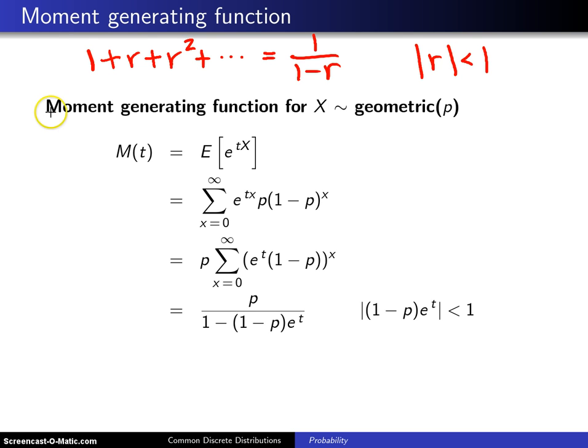Here's the derivation of the moment generating function for x having a geometric distribution with parameter p. By definition, for any random variable, the moment generating function M of t is the expected value of e to the tx.